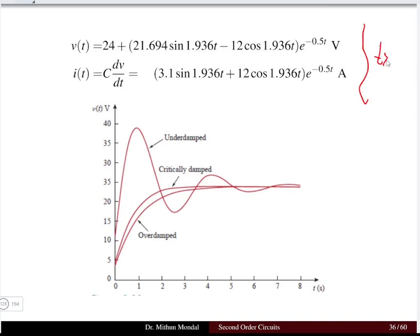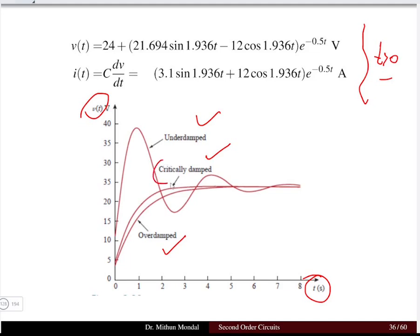We substitute the constants into the general voltage equation and then obtain the current as C·dv/dt. Comparing overdamped, critically damped, and underdamped voltage responses: at 5 time constants the transient dies out and steady state is reached. The overdamped system is very sluggish, the underdamped case is oscillatory, and the critically damped case is the boundary between overdamped and underdamped in terms of time to reach steady state.